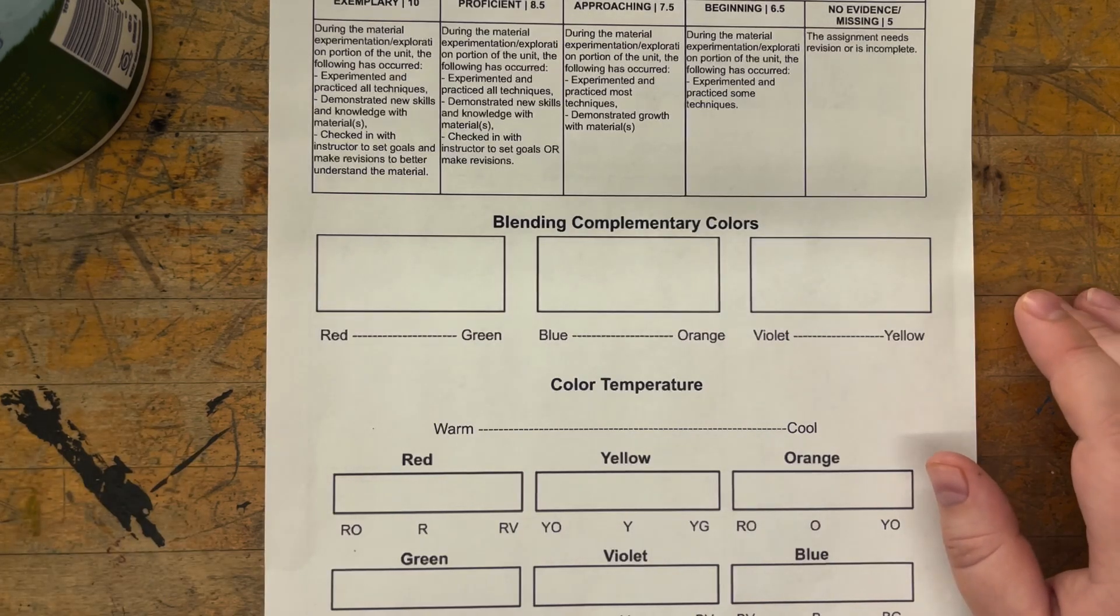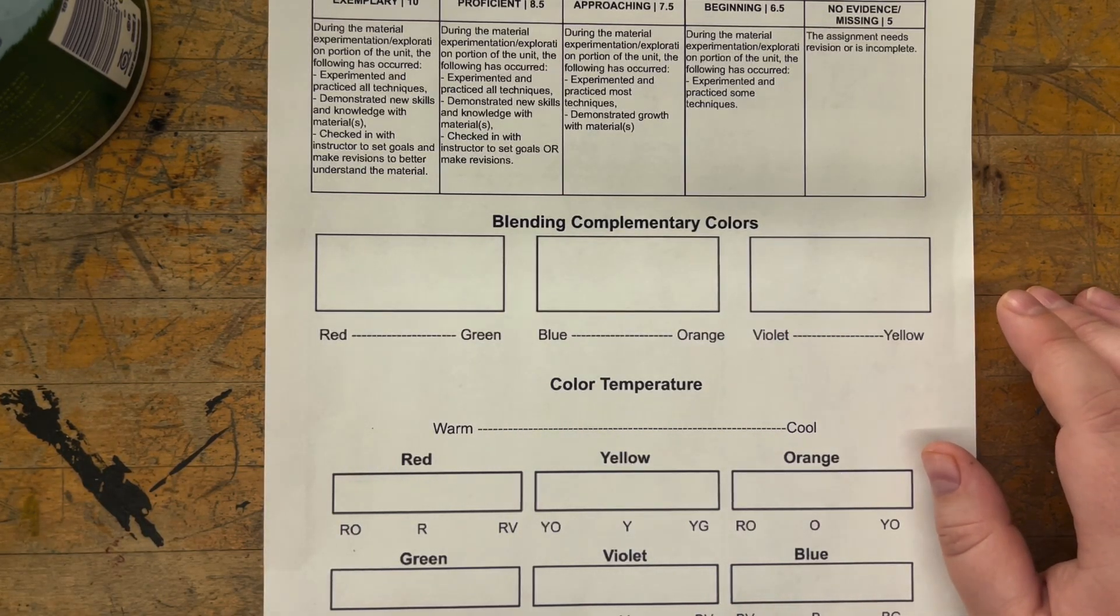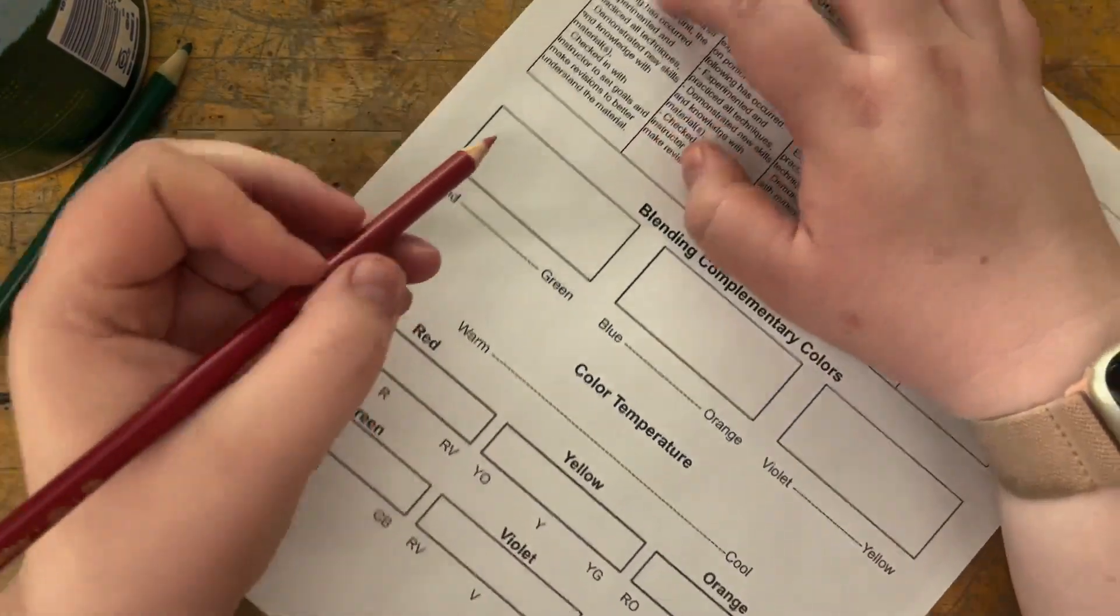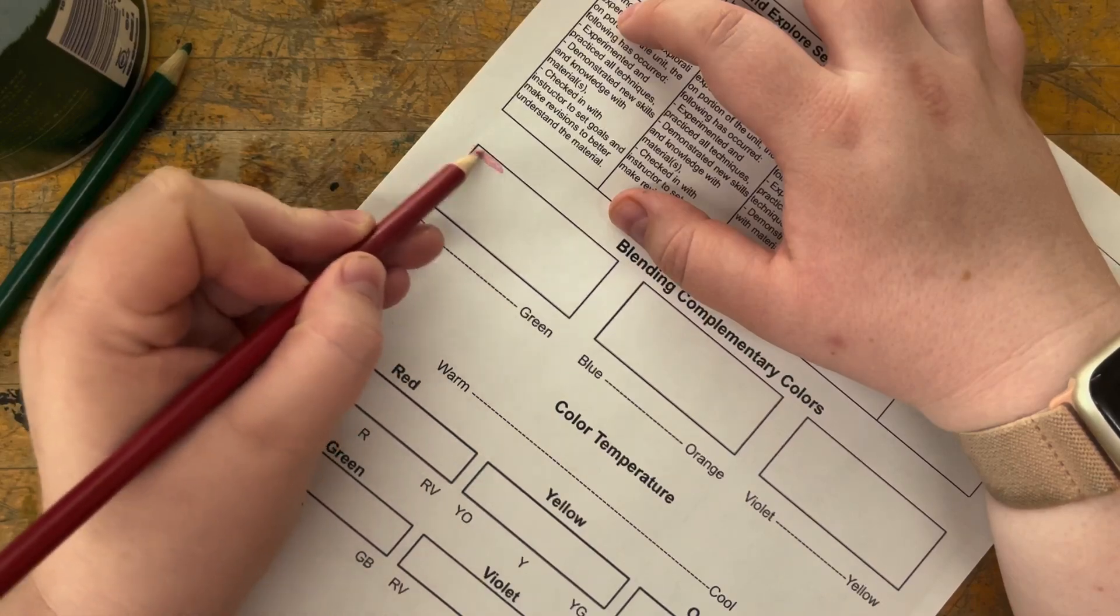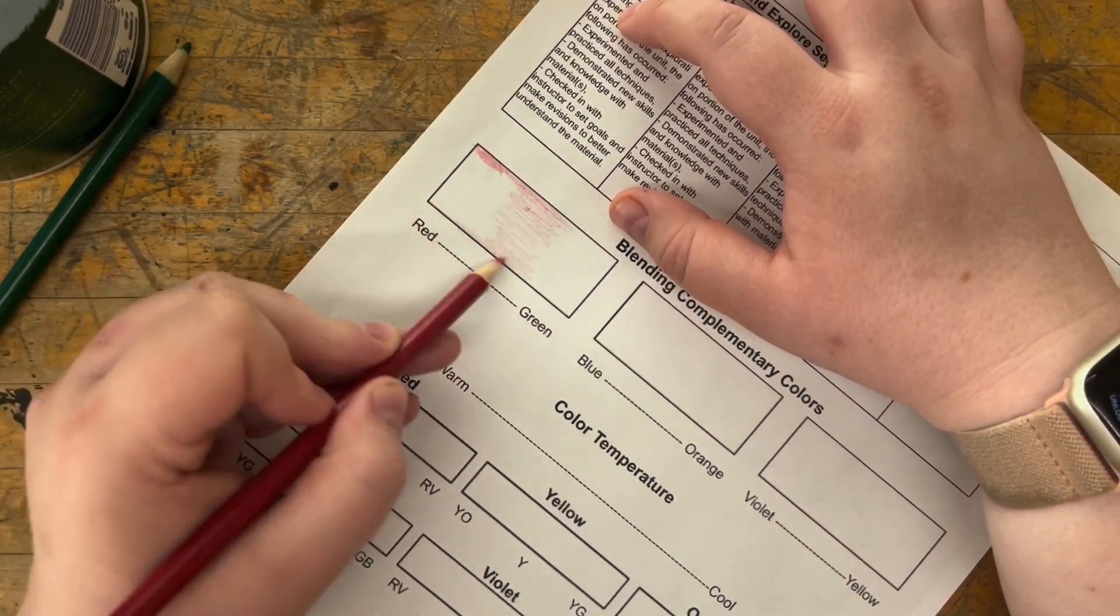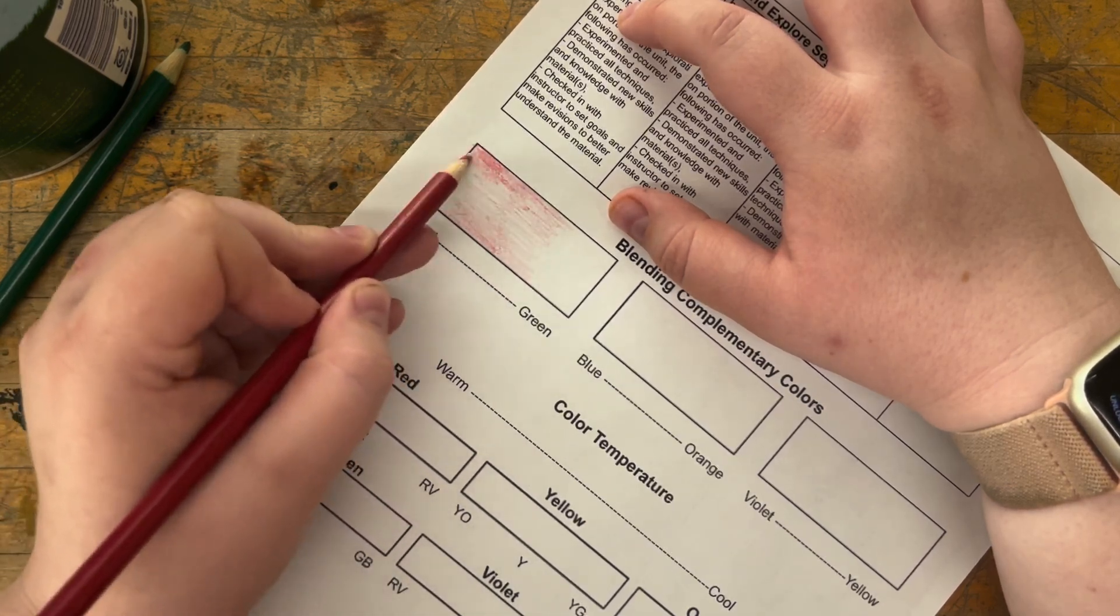The first section that we're going to look at is blending complementary colors. So looking at those two colors opposite each other on the color wheel, using those together to create a range of saturation to desaturation. The three pairs you're going to look at are red and green, blue and orange, and violet and yellow.